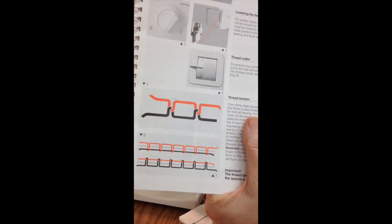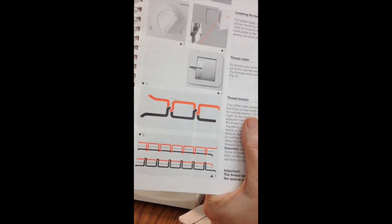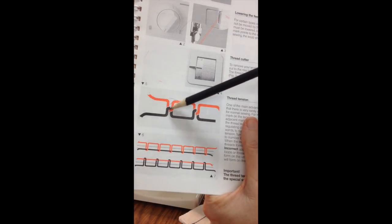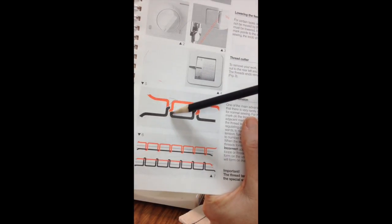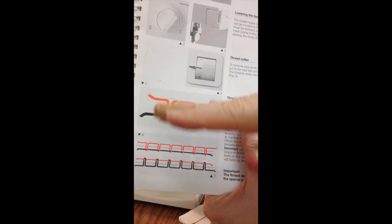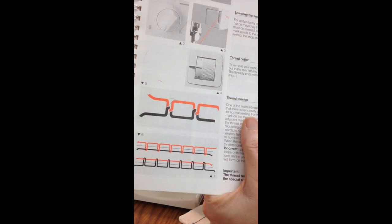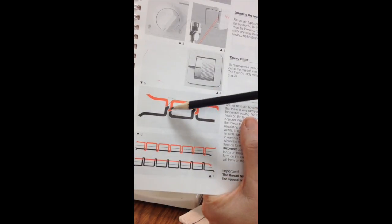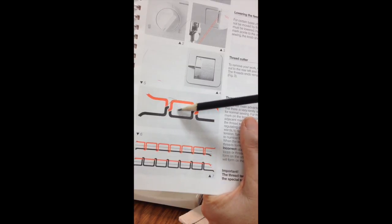In the instruction manual there's a diagram on page 7 that shows the top thread, the red top thread and the black bobbin thread. This is as if we were looking at a side view of the stitching. The loops where the top thread meets the bottom thread are in the center of the fabric. This is correct tension.